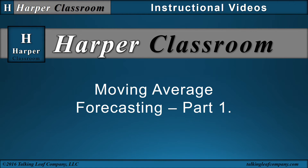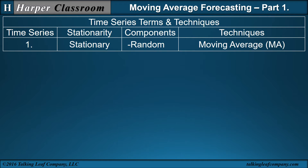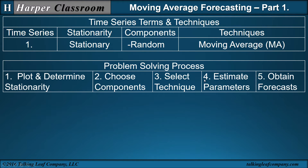Welcome to the Harper Classroom series of instructional videos. This video is on moving average forecasting, part one. The introductory example is part of the time series terms and techniques table, where we have a stationary time series or random component, and the technique of preference is moving average. I'll use the five-step problem solving process to show how to apply the technique of moving average.